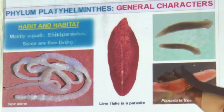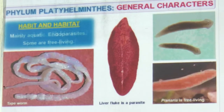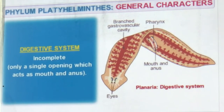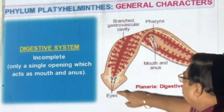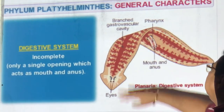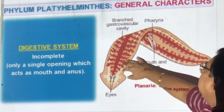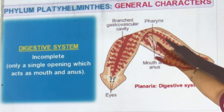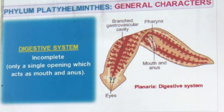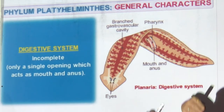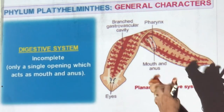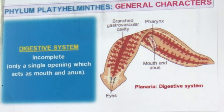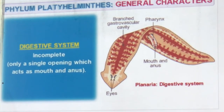The digestive system is incomplete — only one opening for both mouth and anus. In absorptive parasites, a large branched gastrovascular cavity is present so food can be digested. Tapeworms attach to your stomach and intestine and absorb from the body wall throughout their body like a tape. Incomplete means only one opening; complete means both mouth and anus are present.